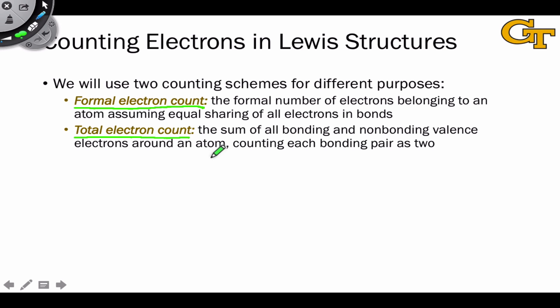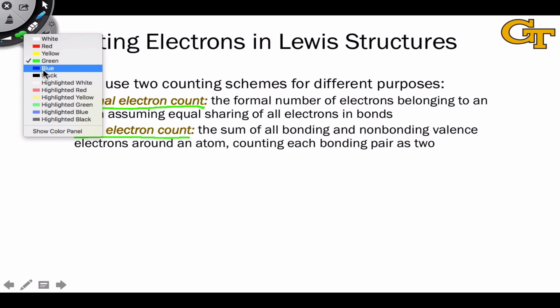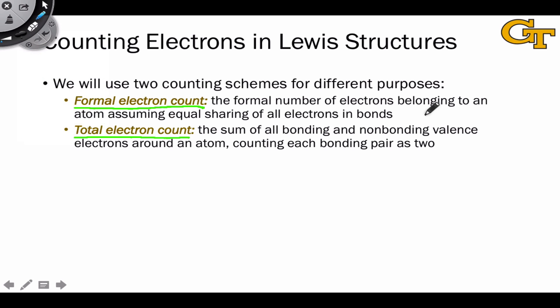The formal electron count is defined as the formal number of electrons belonging to an atom assuming equal sharing. And by equal sharing, we mean we're going to take each bond between two atoms, let's say A and B, and split it in half so that one electron goes to each atom, and count the electrons this way. So in this hypothetical molecule, A has one electron, B has one electron. So we don't double count.